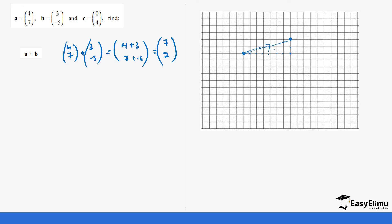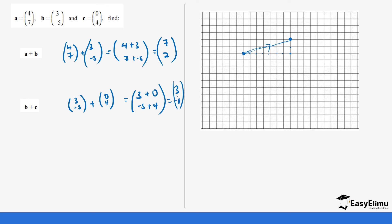Next, b plus c: b is (3, -5) plus c which is (0, 4). This equals three plus zero and negative five plus four, giving us three and negative one. We move three steps on the x-axis — one, two, three — and one step downward on the y-axis. This is our starting point and this is our final point, so this is our vector.